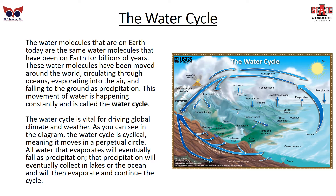The water cycle is vital for driving global climate and weather. As you can see in this diagram, the water cycle is cyclical, meaning it moves in a perpetual circle. All water that evaporates will eventually fall as precipitation. That precipitation will eventually collect in lakes or the ocean, and then will evaporate and continue the cycle.